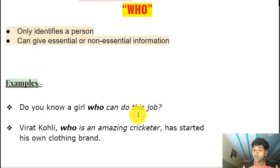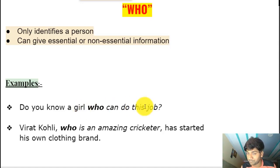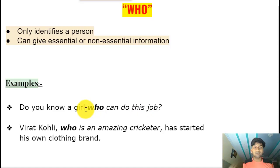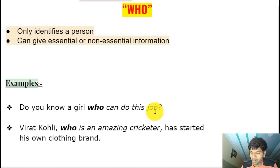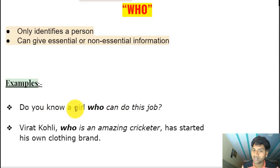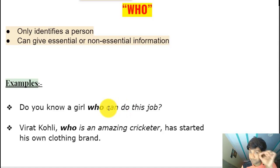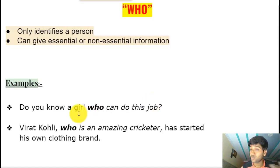Example: 'Do you know a girl who can do this job?' If I just say 'do you know a girl,' that's a complete sentence referring to any girl in the world. But 'do you know a girl who can do this job' refers to a particular type of girl. 'Who' is the relative pronoun coming at the beginning of the adjective clause, identifying the noun 'girl' and giving essential information about her.